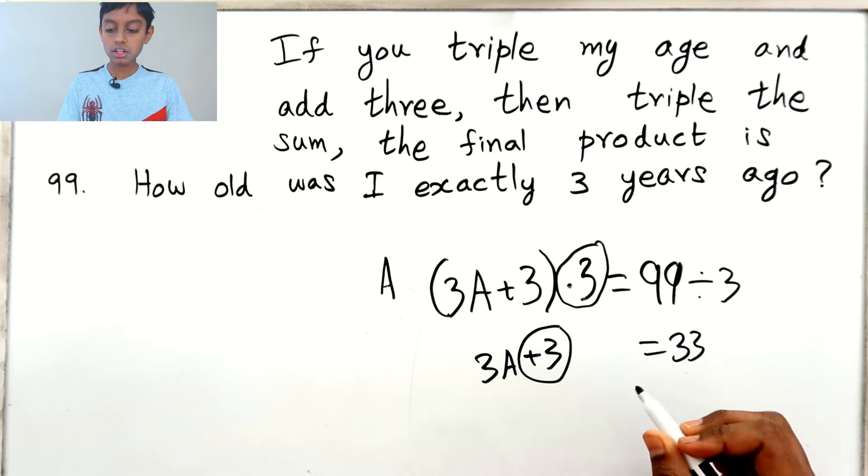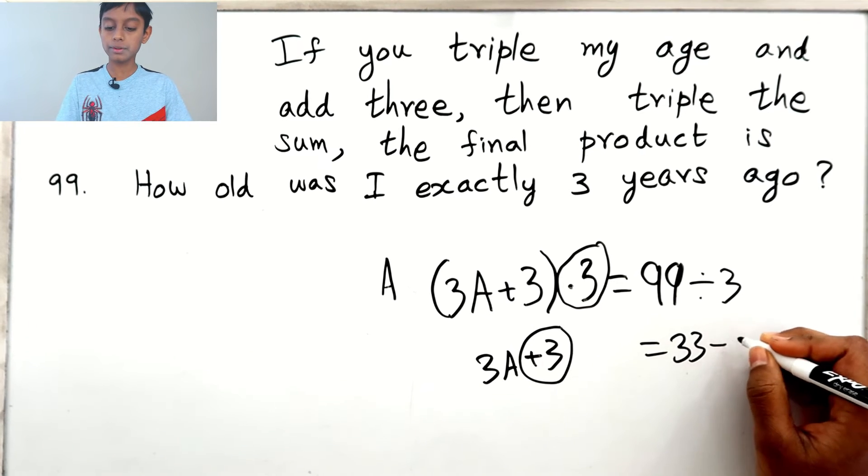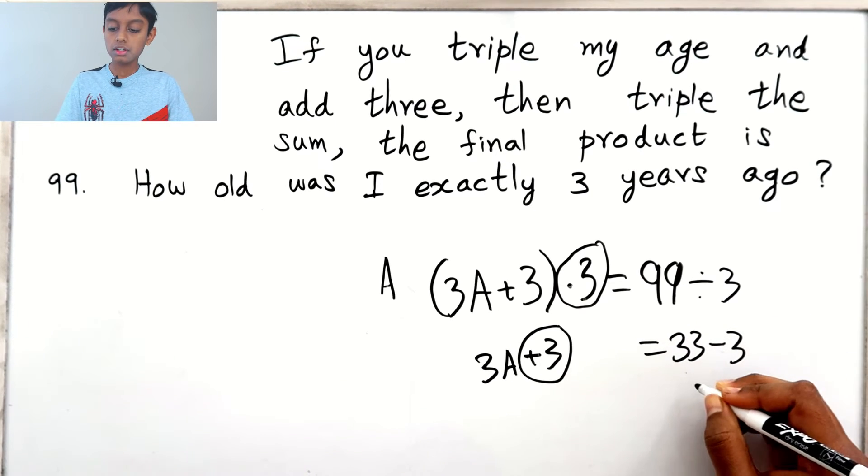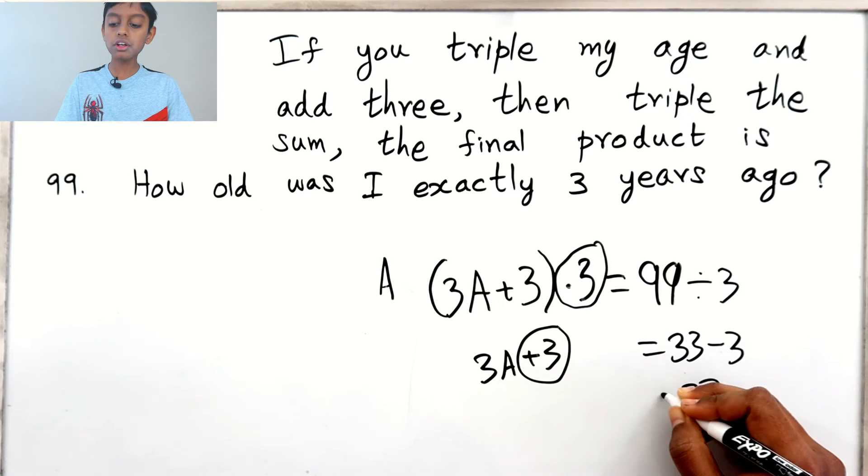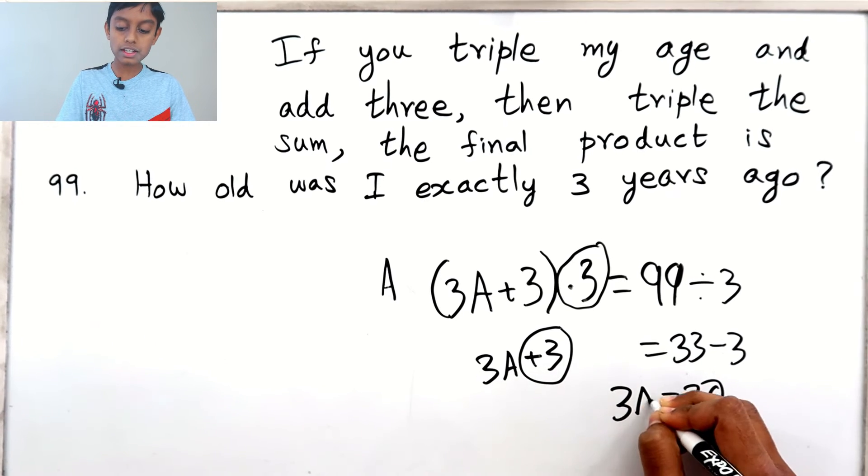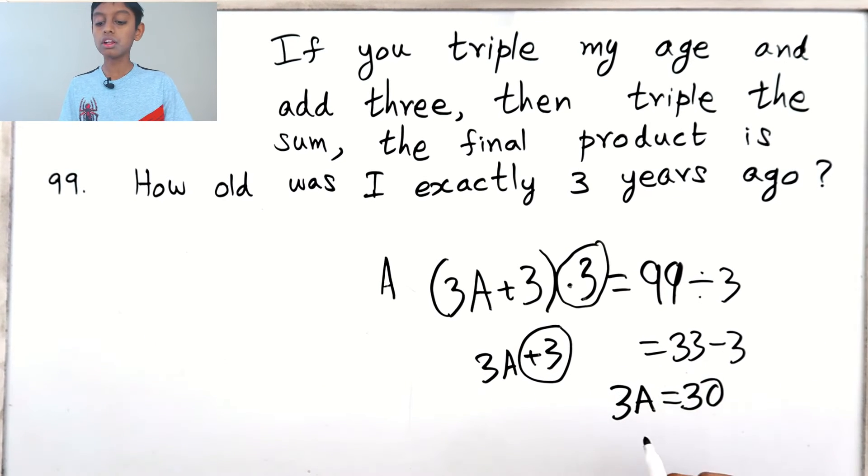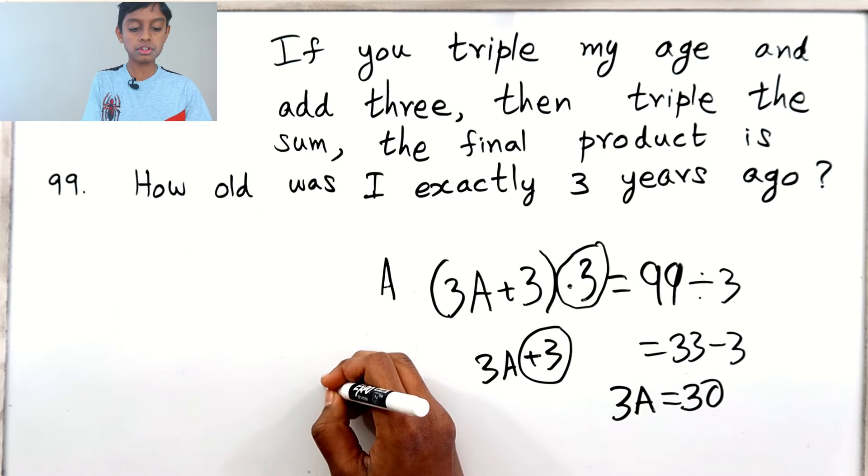Now let's take this plus 3 to the other side of the equal sign to make it minus 3, which is equal to 30. So 30 equals 3A. Now let's divide this by 3 to get the value of A.